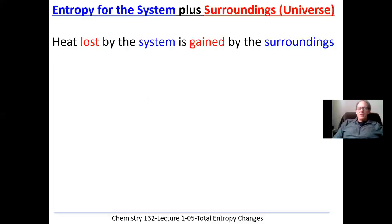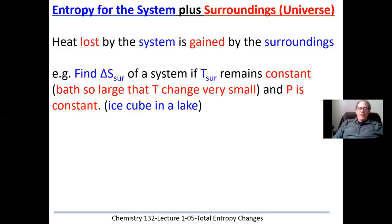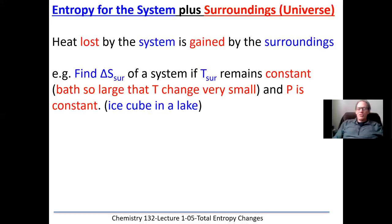Any heat lost by a system is always gained by the surroundings. If a substance loses heat to the surroundings, the quantity of heat is equal and opposite. For example, the delta S of the surroundings of a system — if the temperature of the surroundings remains constant — applies when the surroundings are so large, like dropping an ice cube into a lake, that there will be no temperature change to the surroundings. All examples in this course assume the surroundings are so large that no heat transfer from the system causes a change in their temperature. That simplifies everything.